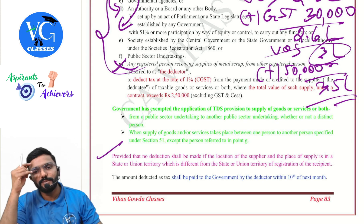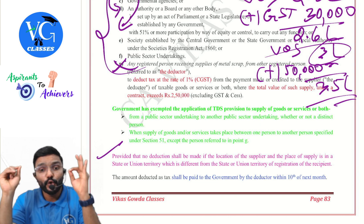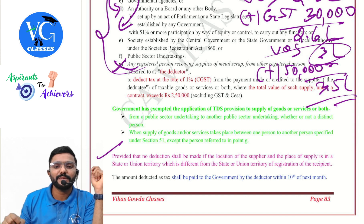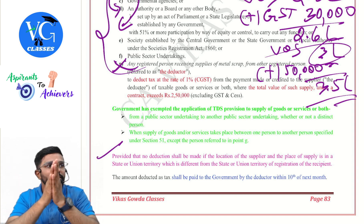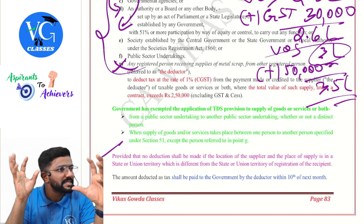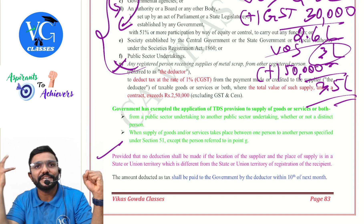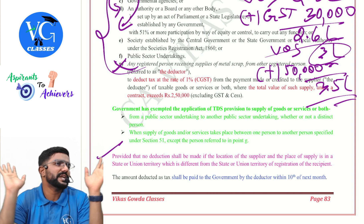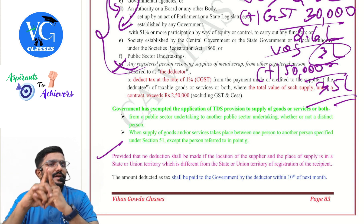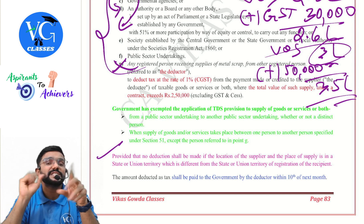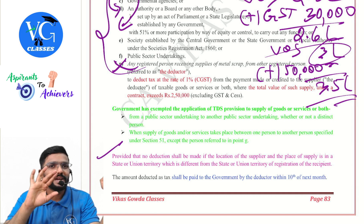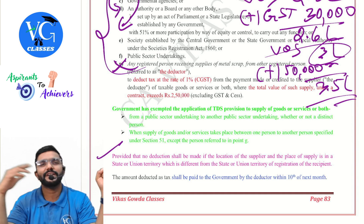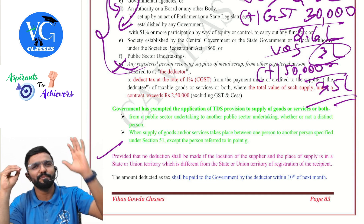No deduction shall be made if the location of supplier and place of supply is in the same state or union territory, which is different from the state or union territory of registration of the recipient. For example, if the place of supply is in Karnataka — intrastate supply, CGST plus SGST applies — but the recipient is registered in Tamil Nadu. In that case, no TDS, because giving credit would lead to complications between state governments.